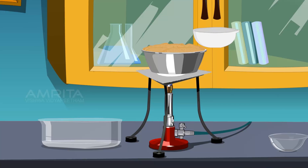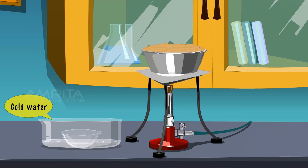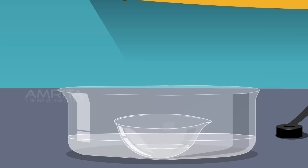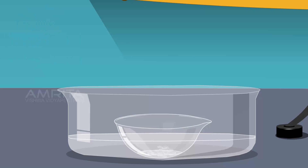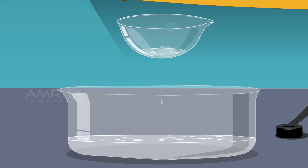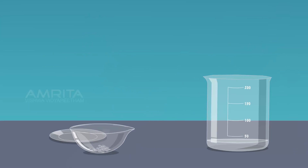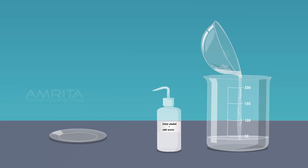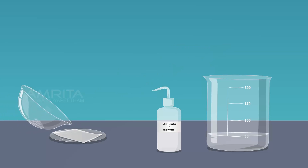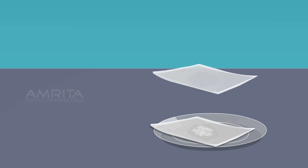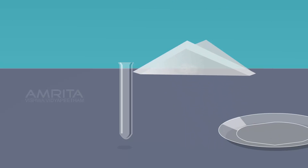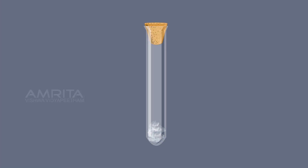Now turn off the burner and stop heating, and transfer the hot solution into the crystallizing dish. Place the crystallizing dish containing hot saturated solution on the trough half filled with water. Allow it to cool slowly for some time. Colorless transparent crystals of potash alum will separate out. After about half an hour, the crystallization is complete. Decant off the mother liquor carefully to the beaker. Wash the crystals with little ethyl alcohol containing a small amount of cold water. Remove the crystals on a filter paper which soaks the solution. Transfer the crystals to another filter paper and dry them by pressing gently with another filter paper. Transfer the crystals into the dry test tube and cork it. The crystals of potash alum are colourless, transparent and octahedral.